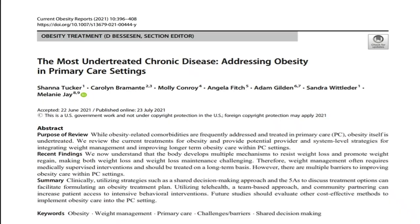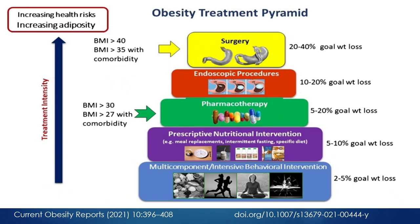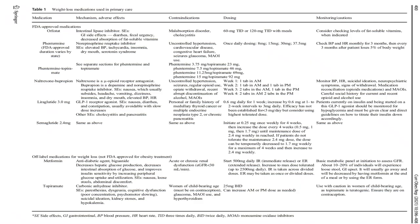Obesity is the most undertreated chronic disease, and it is important to be addressed in the primary care setting. There is a step process — we discussed the first two, and there is a time you need to step in with pharmacotherapy, especially for BMI above 30, or BMI above 27 with comorbidity, with a weight loss goal of about 20%. If you maximize pharmacotherapy and it doesn't work, you can move to endoscopic procedures, and consider bariatric surgery as a last resort for BMI above 40, or BMI above 35 with comorbidity, achieving 20 to 40% total body weight loss. This is a list of all FDA-approved and off-label medications for obesity.